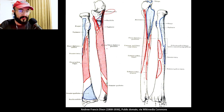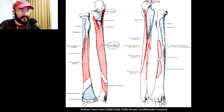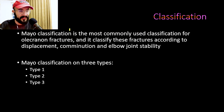The flexor digitorum profundus inserts into the anterior part of the shaft of the ulna. Now let's talk about the classification of olecranon process fractures.